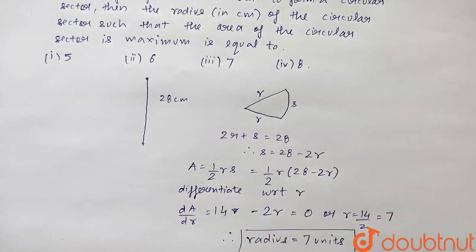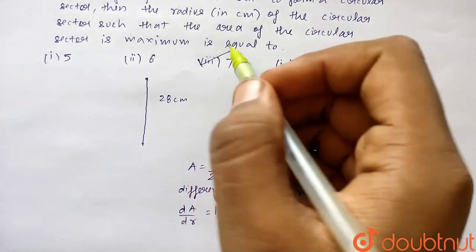This is the value we got of the radius. We will also mark the correct option students which is option 3, 7. Thank you so much.